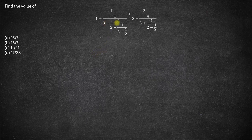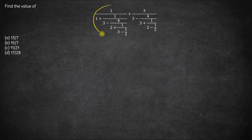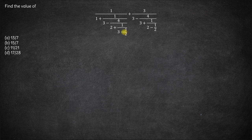Here we have to find the value of this whole expression. This whole expression is basically the sum of two terms. Let us simplify each of these terms one by one. Here we have 3 minus 1/2. Now, 3 minus 1/2 is 3 into 2, which is 6, and 6 minus 1 is 5/2. So this comes out to be 5/2.